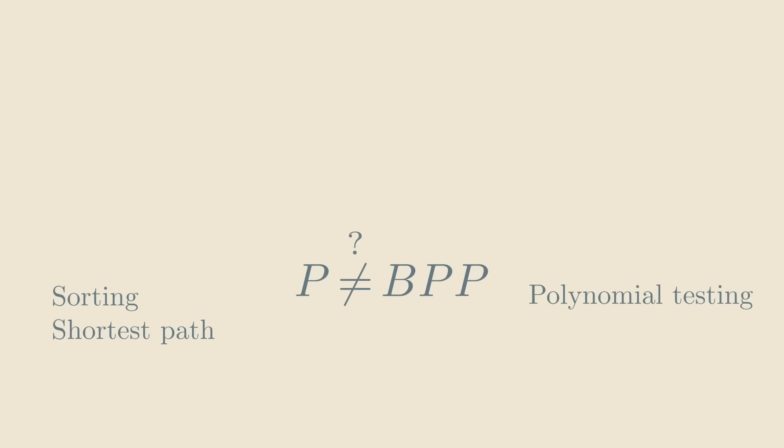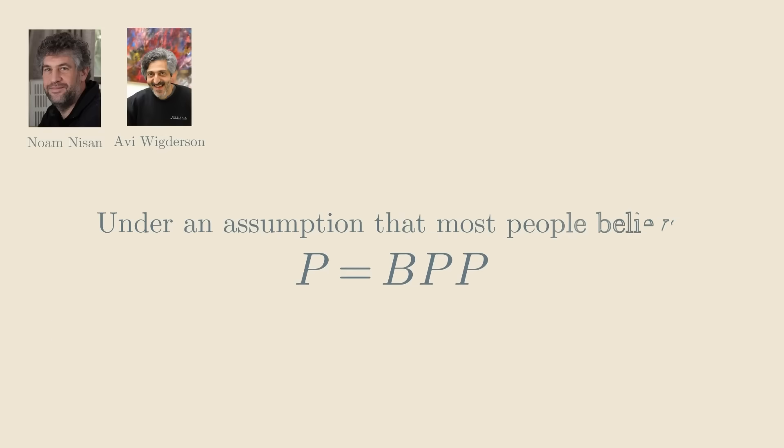That's why in the 80s many researchers suspected that P is not equal to BPP. At first glance, there's just no reason why you should be able to convert randomized algorithms into deterministic ones in full generality. So it was shocking when Nisan and Wigderson proved that P is equal to BPP, under an assumption that most researchers believe to be true.